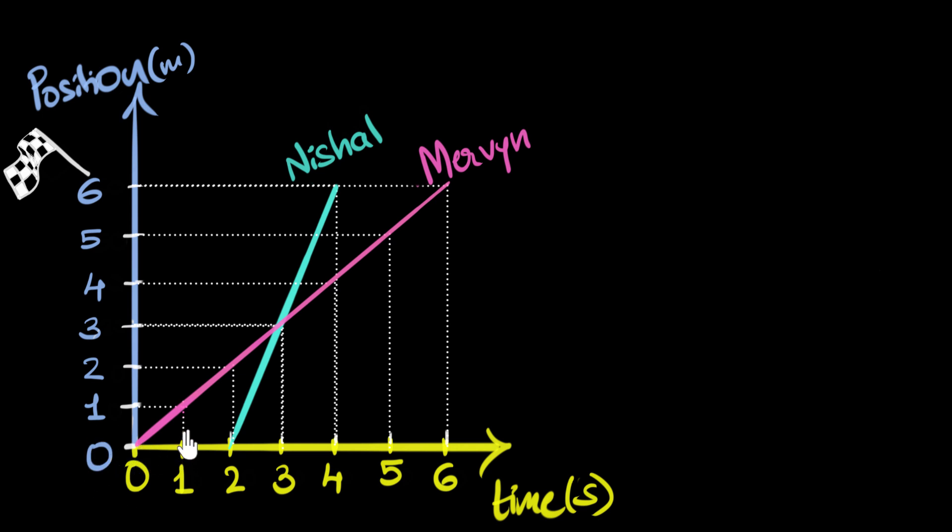At one second, he is over here at one meter. At two seconds, he is at two meters and so on. And at the sixth second, he is at six meters at the finish line. So what we see from his graph is that it took him six seconds to finish the race.